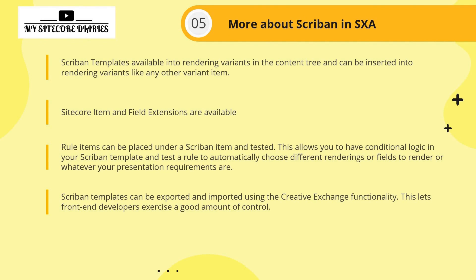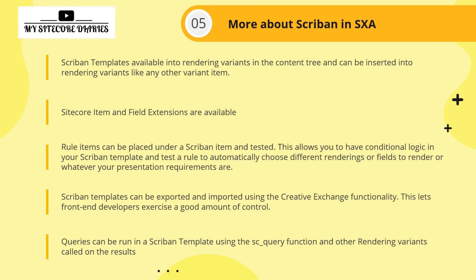Scriban templates can be exported and imported using the Creative Exchange functionality, giving front-end developers a good amount of control. The front-end team can export the Scriban templates, make their changes, and upload them again — a very important feature for front-end teams. Finally, queries can be run in the Scriban template using the 's_query' function, and other rendering variants can call on the results. These are the key pointers for Scriban in SXA.